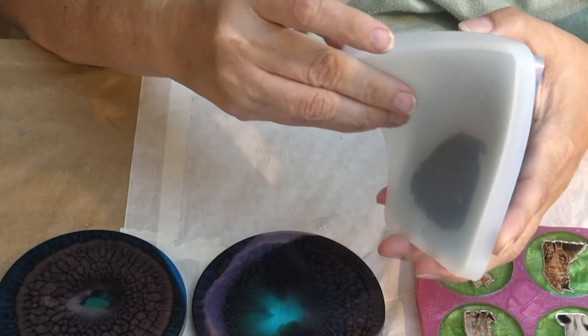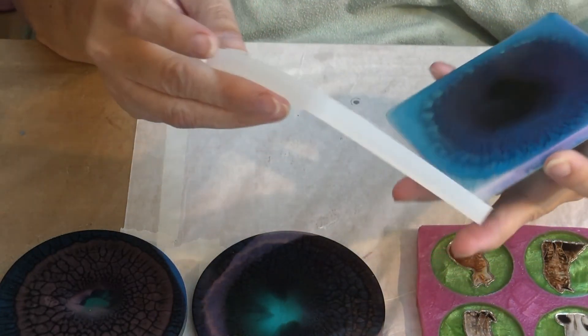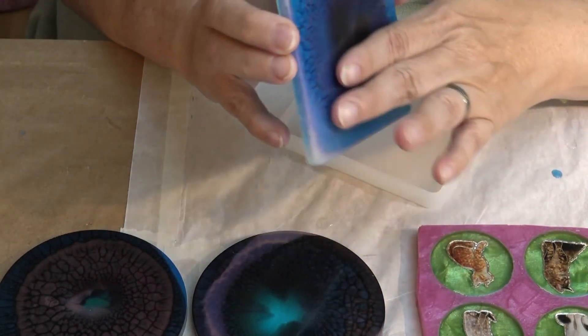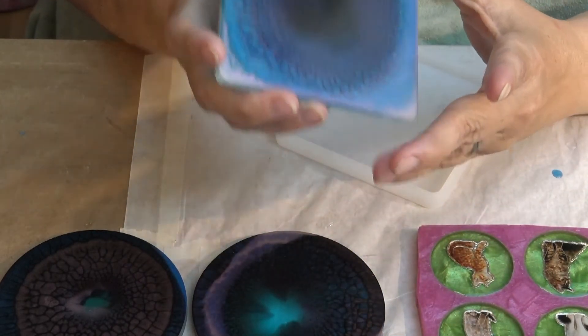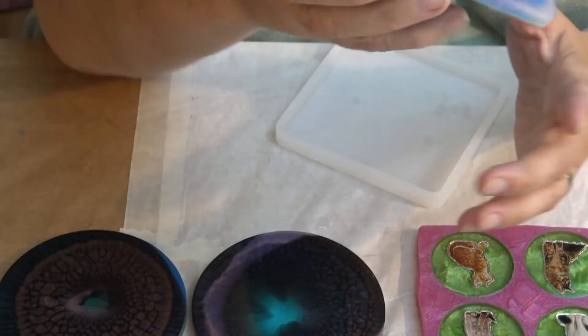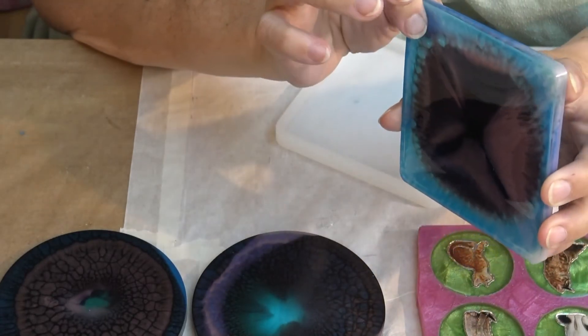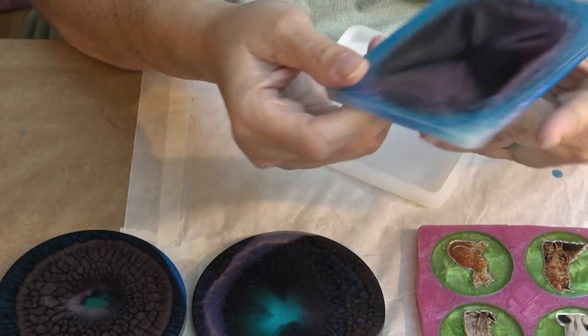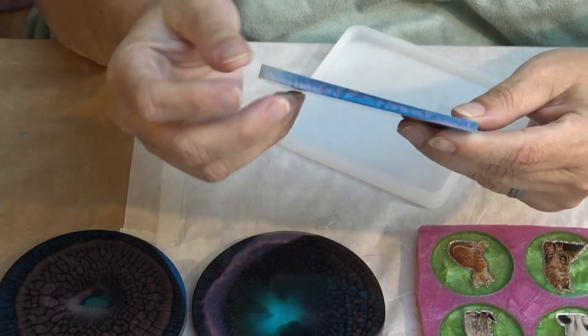So, this is the one with the leftover resin. And as you can see, it's not evenly thick because my table wasn't level enough. But I think it has kind of depth, and I really like that one. And I will do something else with that one in another video.